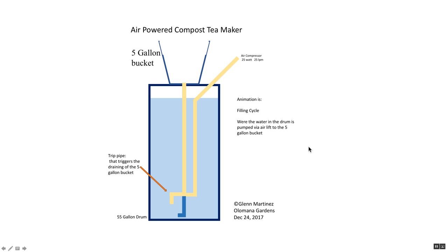Well folks, I want to introduce you to the air-powered compost tea maker. This is a 55-gallon drum, and here in the center you've got a 25-watt air compressor up here and what we're going to do.